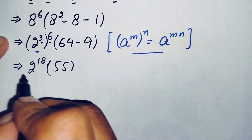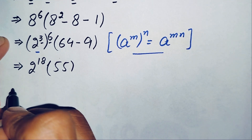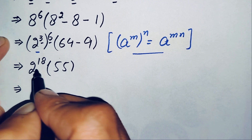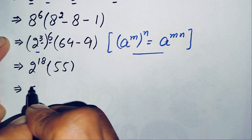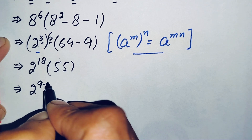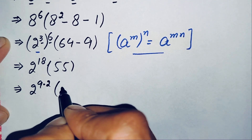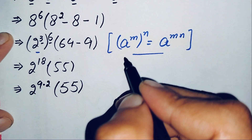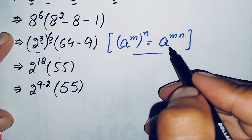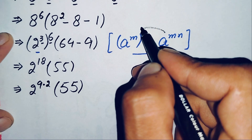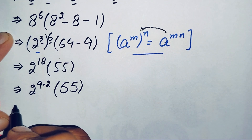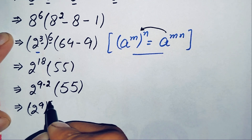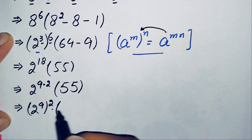Now we will find the value of 2 raised to power 18. We can write the exponent 18 as 9 times 2. Using the power-of-a-power property, this becomes 2 raised to power 9, whole raised to power 2, times 55.